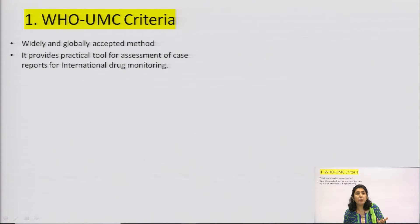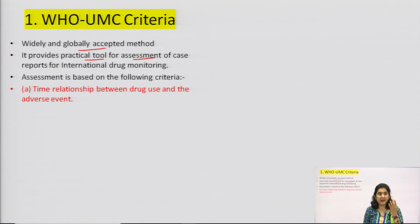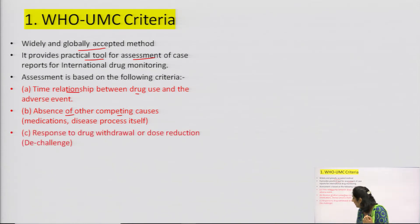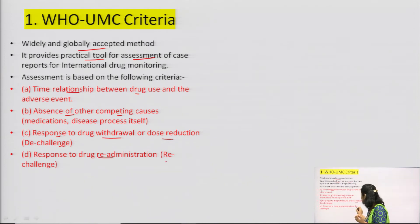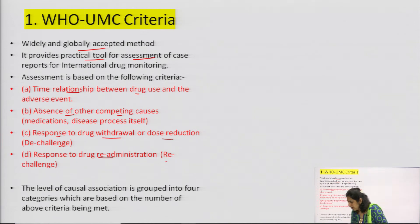The WHO UMC scale is a widely and globally accepted method. It provides a practical tool for assessment of case reports for international drug monitoring. The assessment is built on four criteria: one, time relationship between drug use and adverse event; two, absence of other competing causes such as medication or disease process; three, response to drug withdrawal or dose reduction (de-challenge); and four, response to drug re-administration (re-challenge). UMC stands for Uppsala Monitoring Centre.